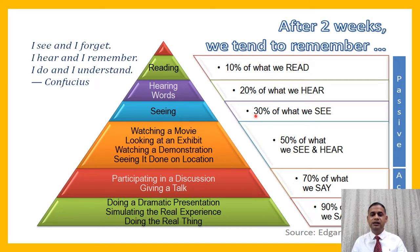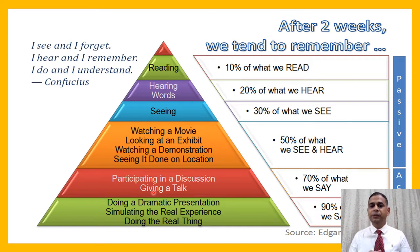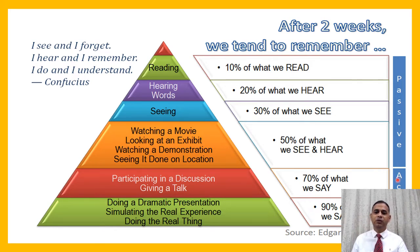Seeing something visually, 30% of what we see. Watching a movie, looking at an exhibit, watching a demonstration, seeing it done on location — 50% of what we see and hear. Participation in any discussion or giving a talk — 70% of what you say, you will be able to remember. Doing a dramatic presentation, simulating the real experience or doing the real thing — 90% of that you will be able to remember. So here you can see that passive learning — up to 50% — is your passive learning. But if you go with active learning, 70% to 90% you will be able to remember.